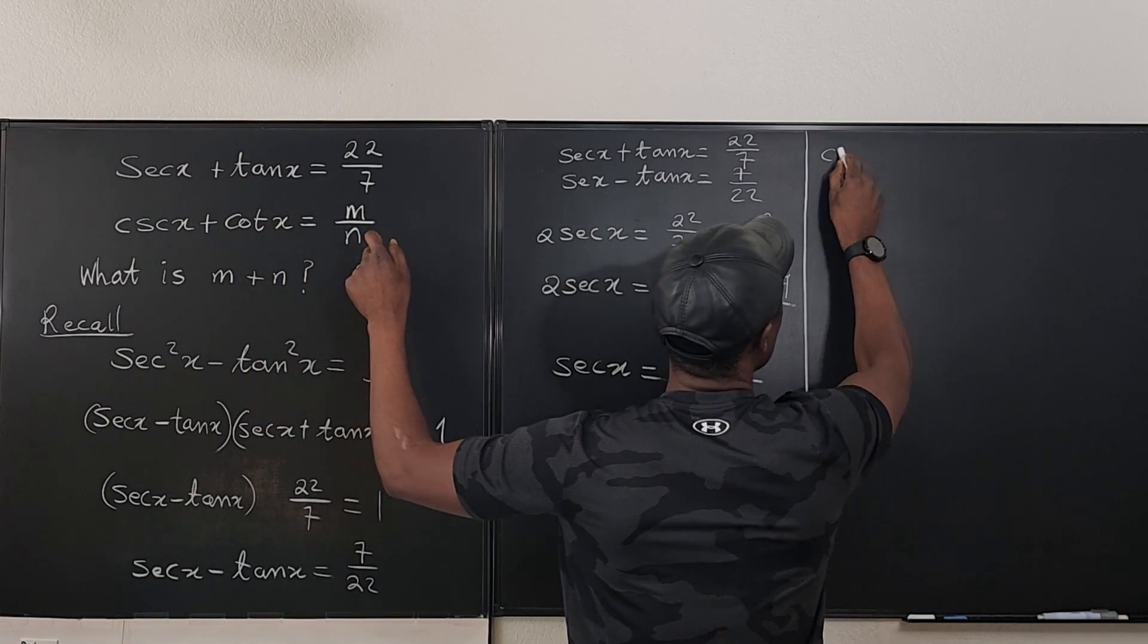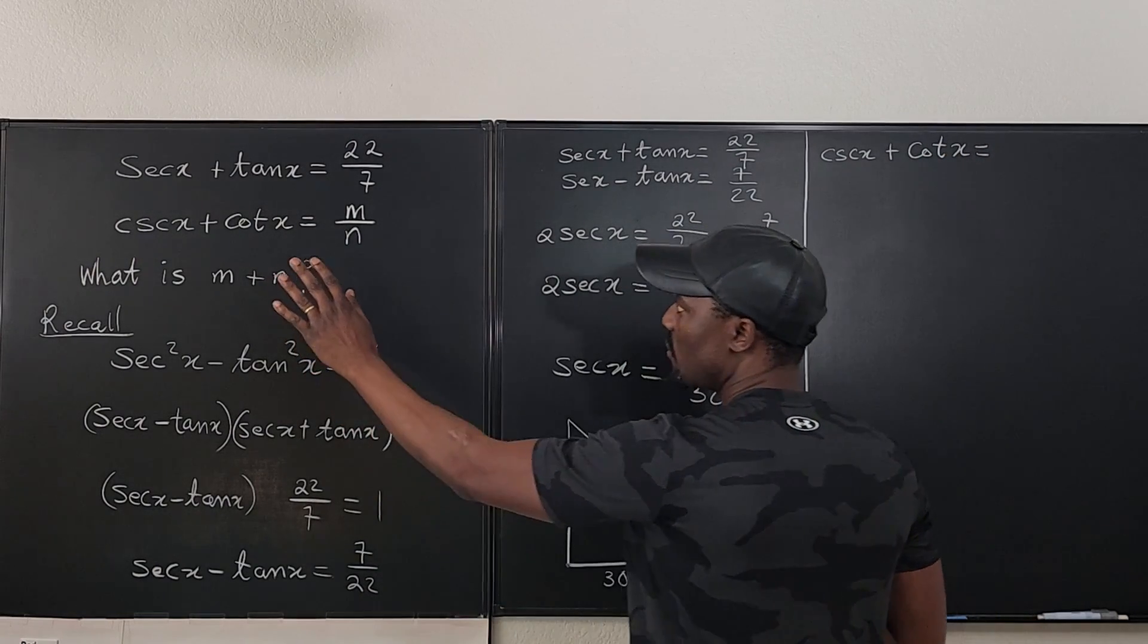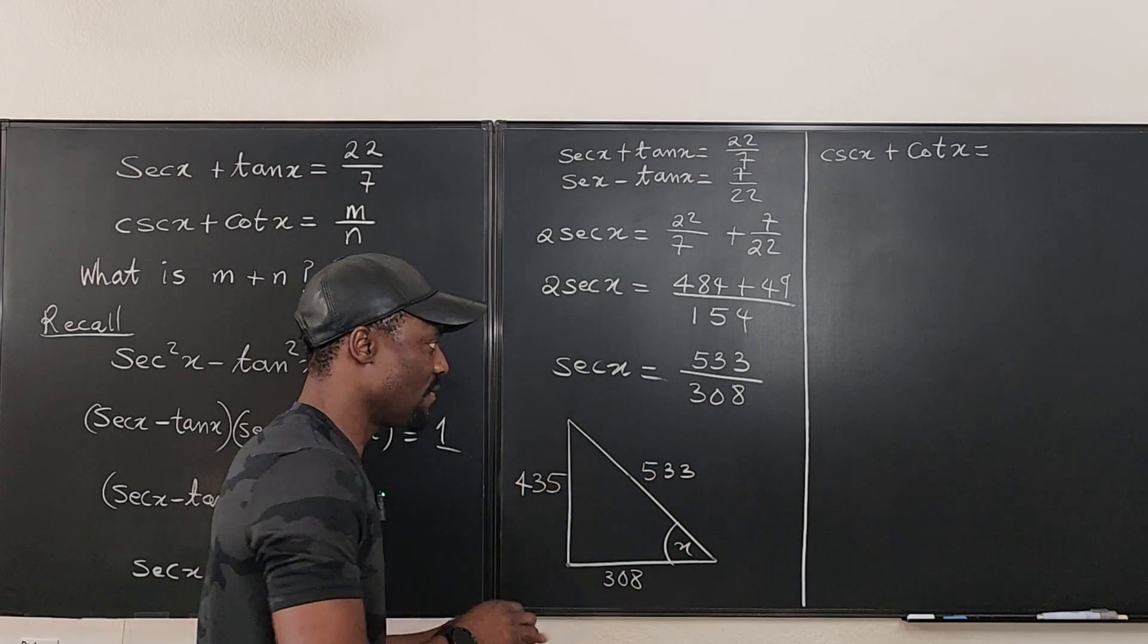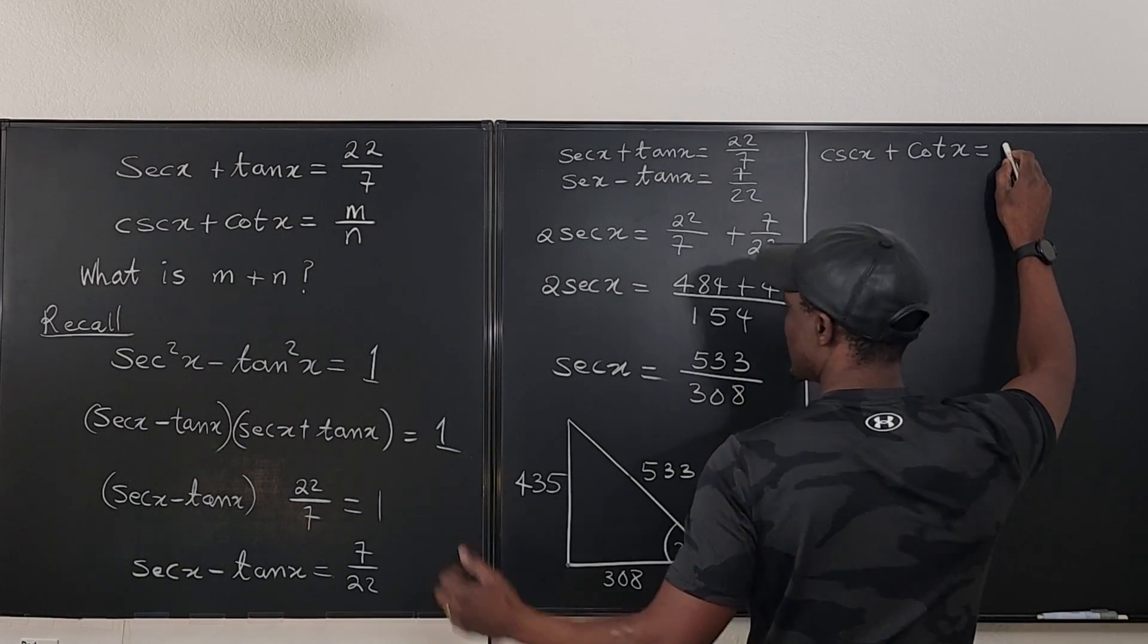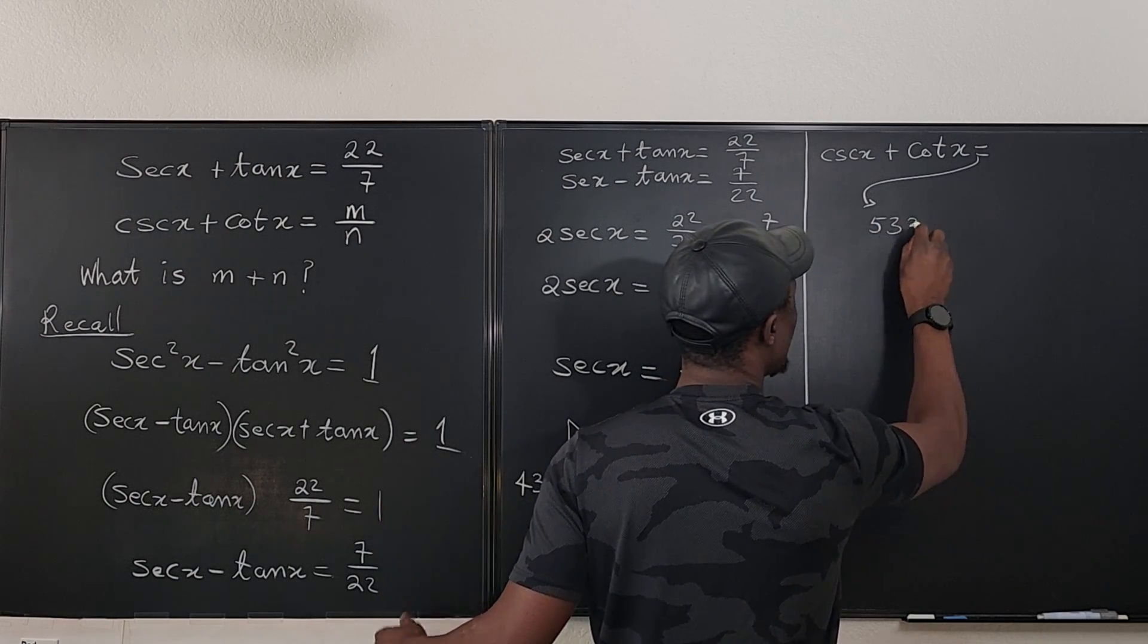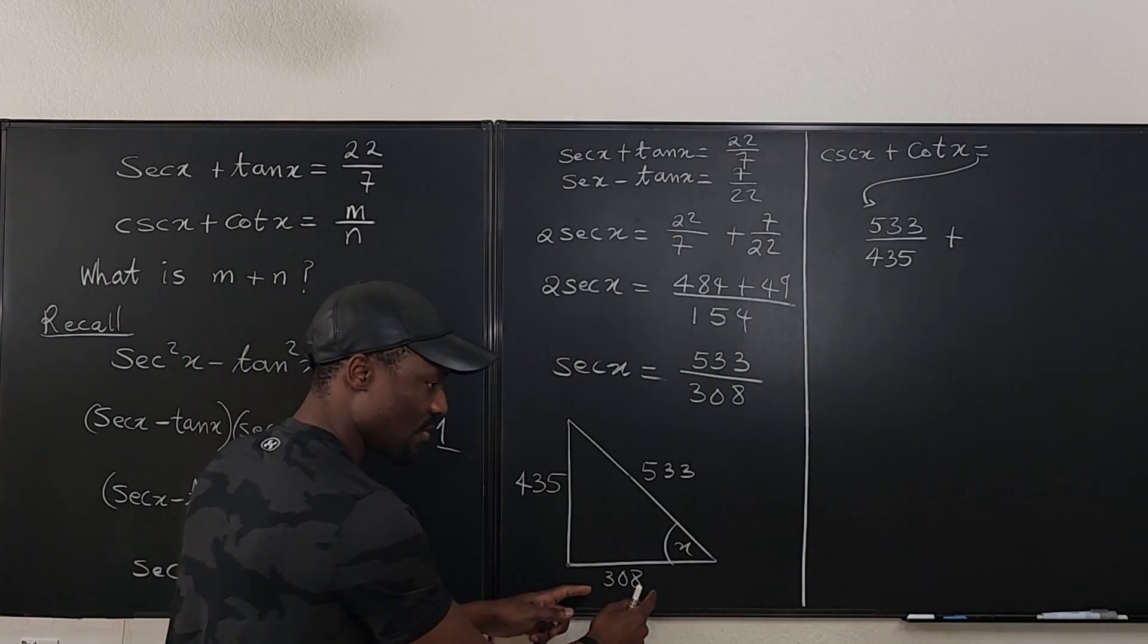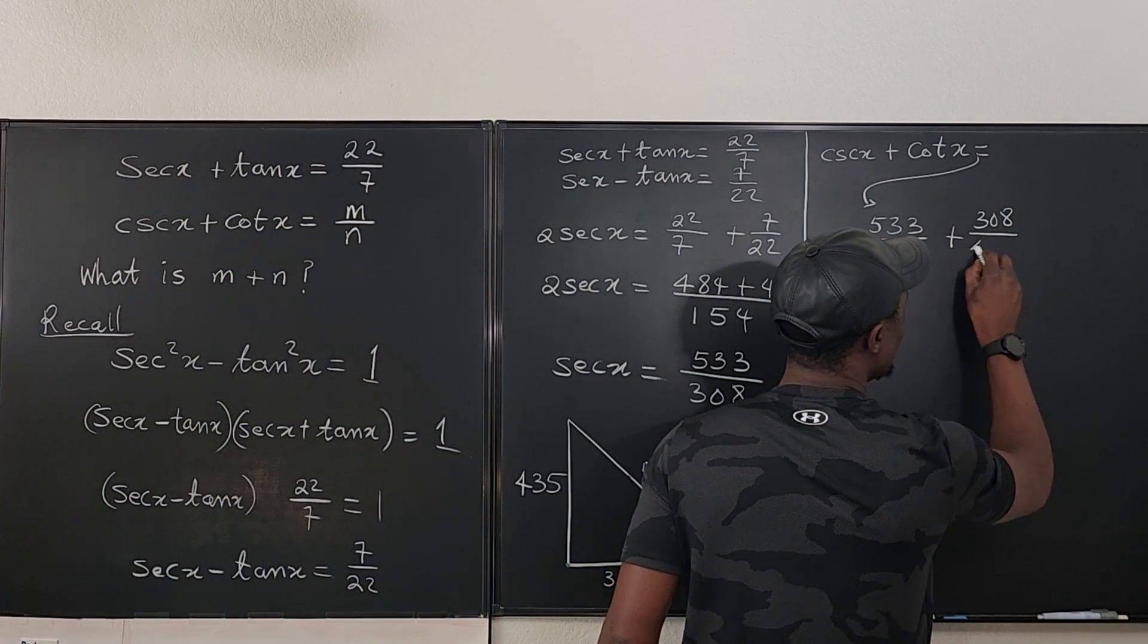What is cosecant x? So cosecant x plus cotangent x will be equal to what is cosecant x from here? Cosecant is the reciprocal of sine. So it's going to be hypotenuse over opposite. So it's going to be 533 over 435. Let me put it here. So it should be in the middle. 533 over 435 plus, we get this one, it's cotangent. That's adjacent over opposite, which is 308 over 435.